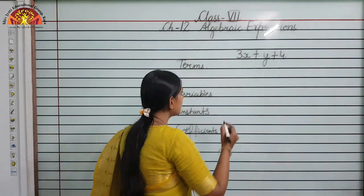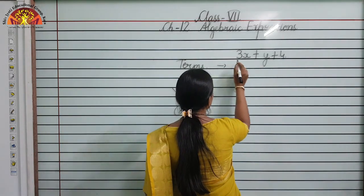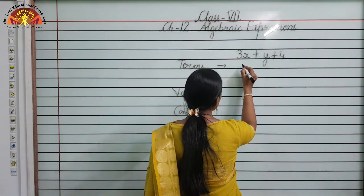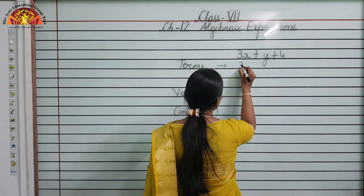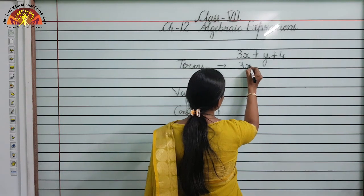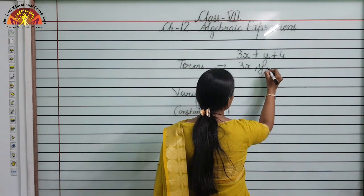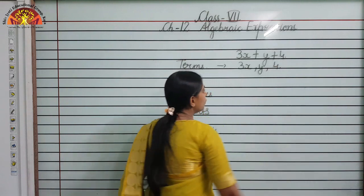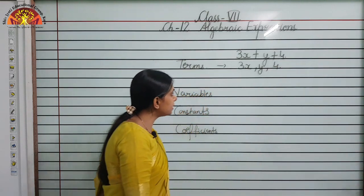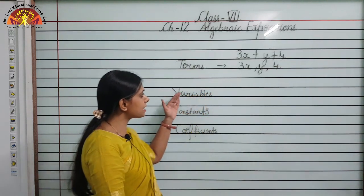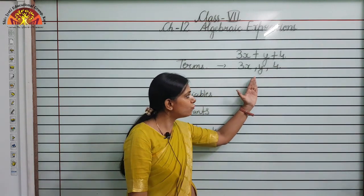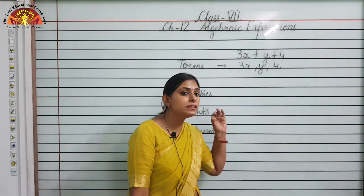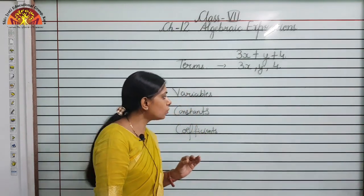So what are the terms in this particular algebraic expression? That is 3x, y, and 4. The terms in this algebraic expression are 3x, y, and 4.